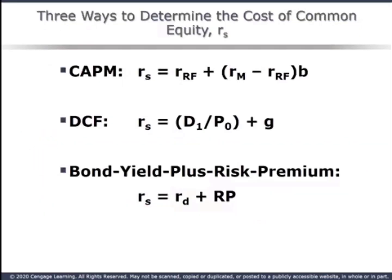We have three methods to find an estimate of the cost of retained earnings: CAPM from Chapter 8, the Discounted Cash Flow model from Chapter 9, and own bond yield plus risk premium — a new benchmark method.